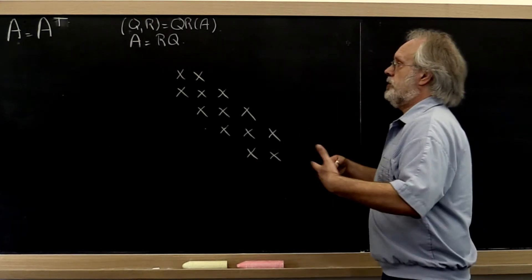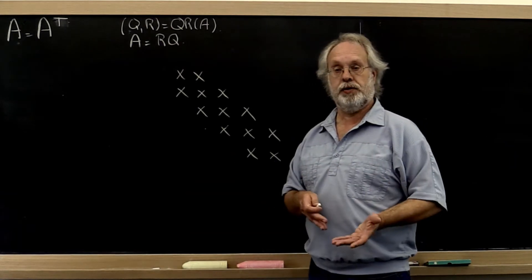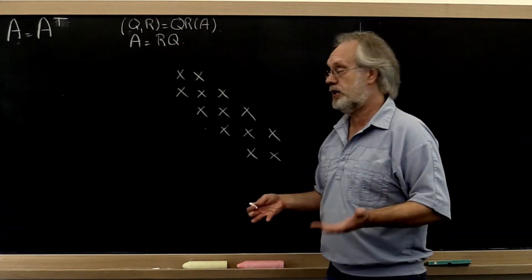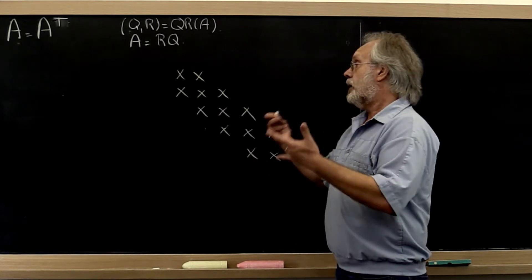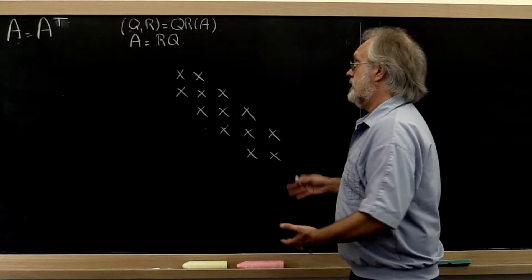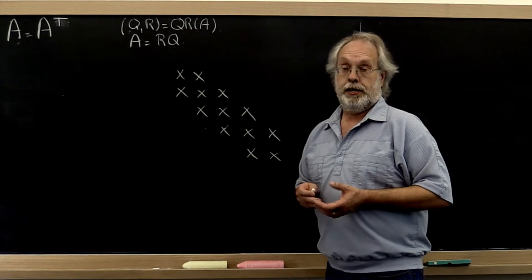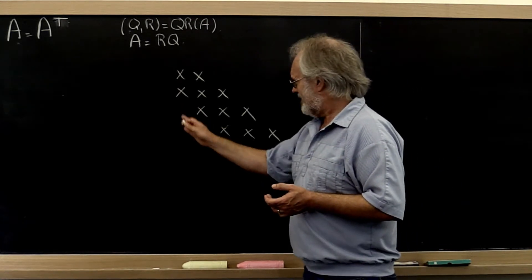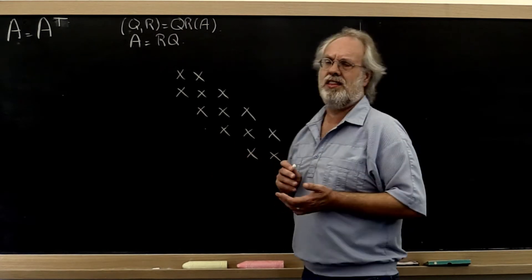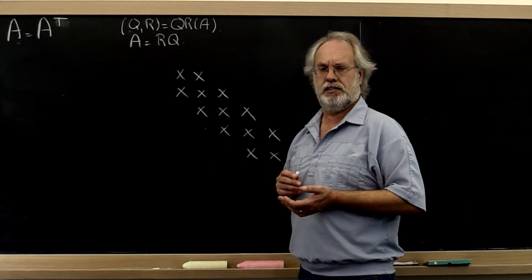Now we could go back to our householder-based QR factorization and apply householder transformations to make this matrix into an upper triangular matrix R. But notice that there are a whole bunch of zeros already in this matrix. And it would be nice to take advantage of that.